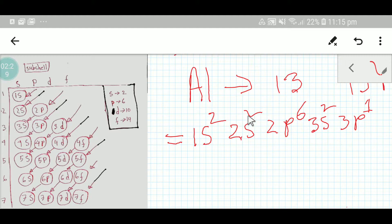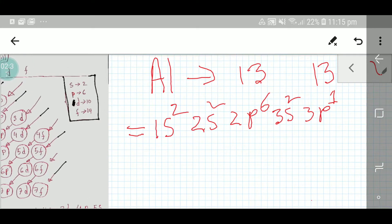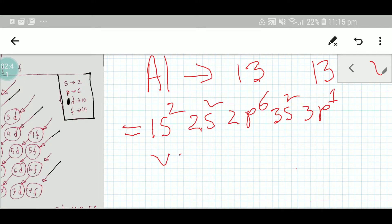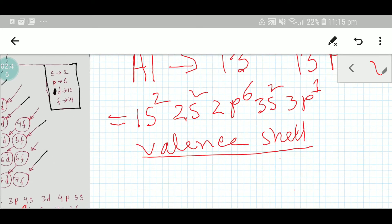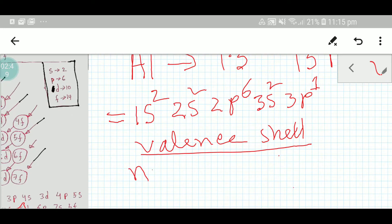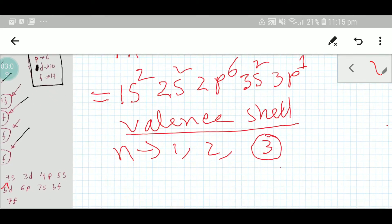That gives us 2 plus 6 is 8, plus 2 is 10, plus 2 is 12, so we need 1 more electron. Now we have to find out the valence shell by the value of principal quantum number. Principal quantum number is denoted by n. Here the principal quantum number is 1, 2, 3. For valency shell we have to consider the highest value of n, so we will consider 3.